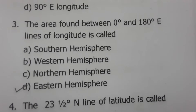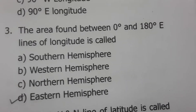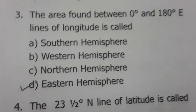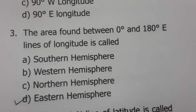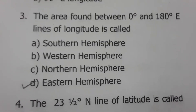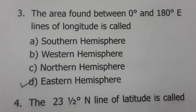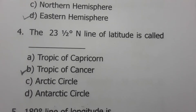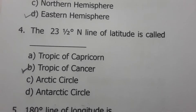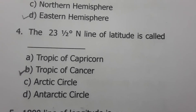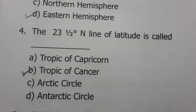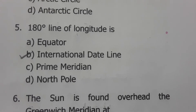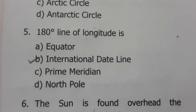Generally, the Earth is divided into four hemispheres: Southern Hemisphere, Western Hemisphere, Northern Hemisphere, and Eastern Hemisphere. From 0 to 180 degrees East is the Eastern Hemisphere. The 23.5 degree North line of latitude is called the Tropic of Cancer. The 180 degree line of longitude is the International Date Line, and by using this line the date of any day is determined.